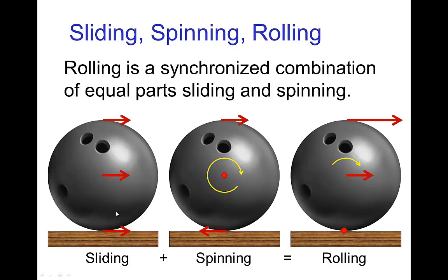If we had just pure sliding, then we would have all points of the ball moving together at the same speed. On the other hand, if the ball was spinning in place, then the center would be stationary, the top would be moving clockwise and the bottom counterclockwise. With rolling, it's a combination of equal parts sliding and spinning, so the bottom is momentarily stationary, the middle is moving at a certain speed, and the top rim is moving at twice the speed of the middle.